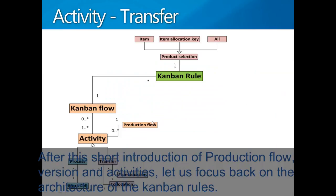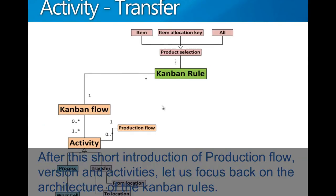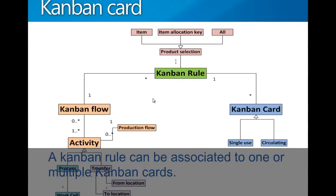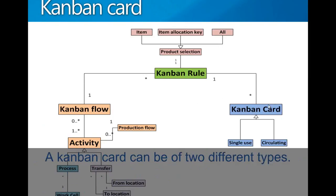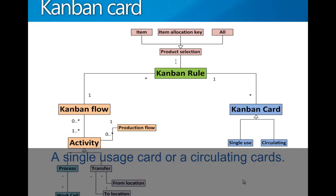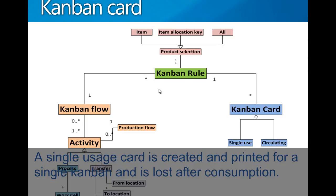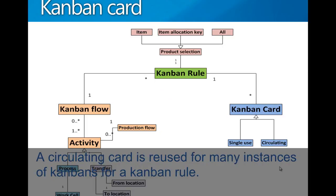After this short introduction of the production flow, the activities, and the activity types process and transfer, let us focus back on the architecture of the Kanban rule. A Kanban rule can be associated to a Kanban card. A Kanban card represents a Kanban as a physical document. Kanban cards can be of two different types: they can be single usage cards — a single usage card is only printed once for a single Kanban and then is lost in the process — or a circulating card, which is reused for each iteration of a Kanban.